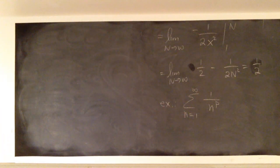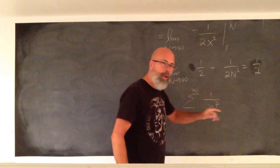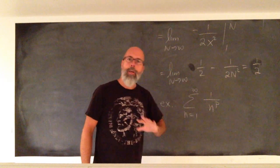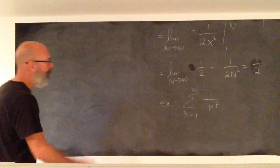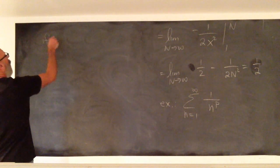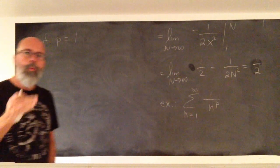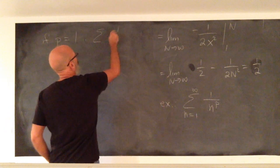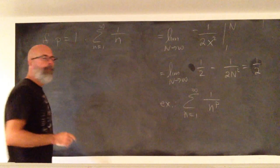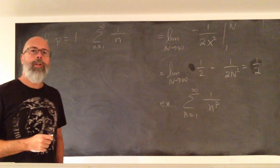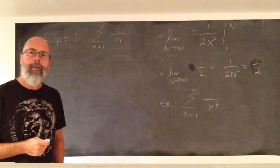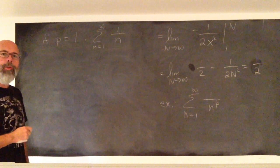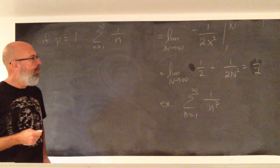To generalize in complete generality, we need to worry about what p actually is. Because if p is 1, the integral is completely different. Let's start with that exact issue: what happens if p is 1? We're looking at the series 1 over n. We've treated this on a separate occasion and saw that this series diverges, but let's redo it using the integral test — the answers, as you will see, will coincide.